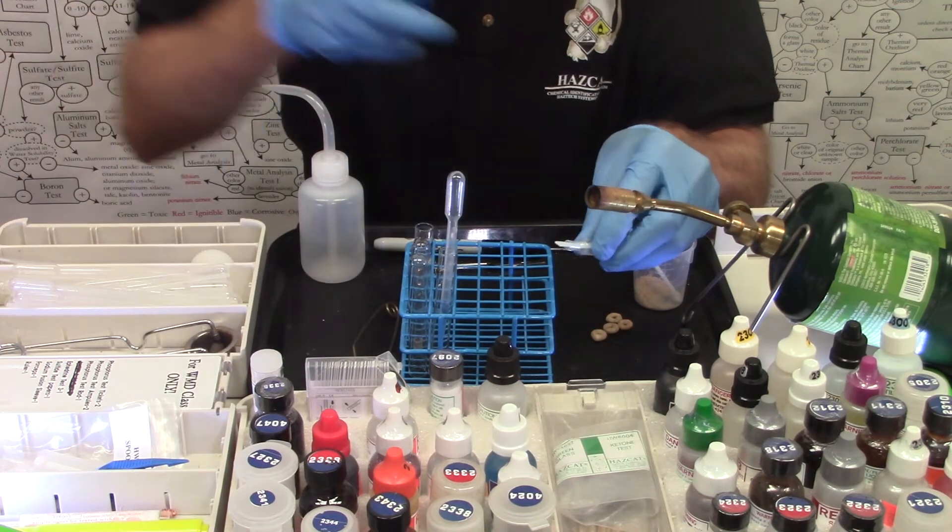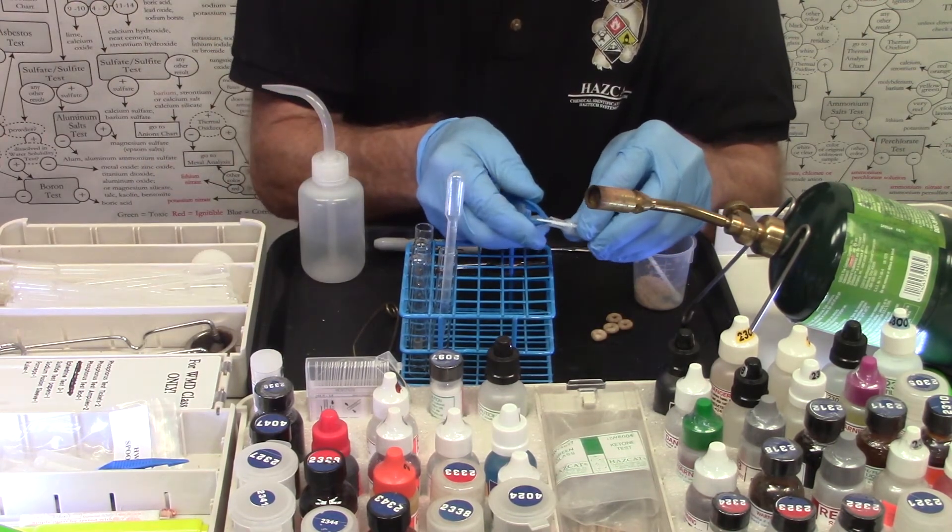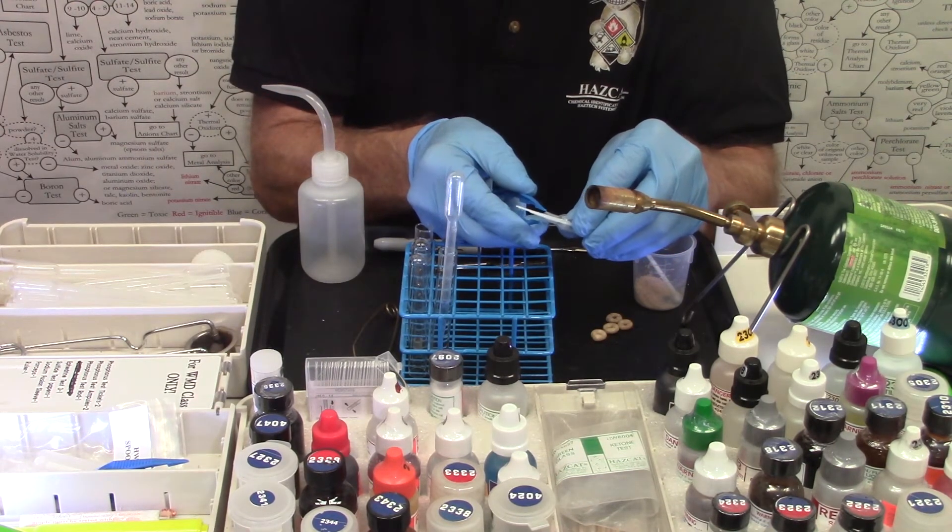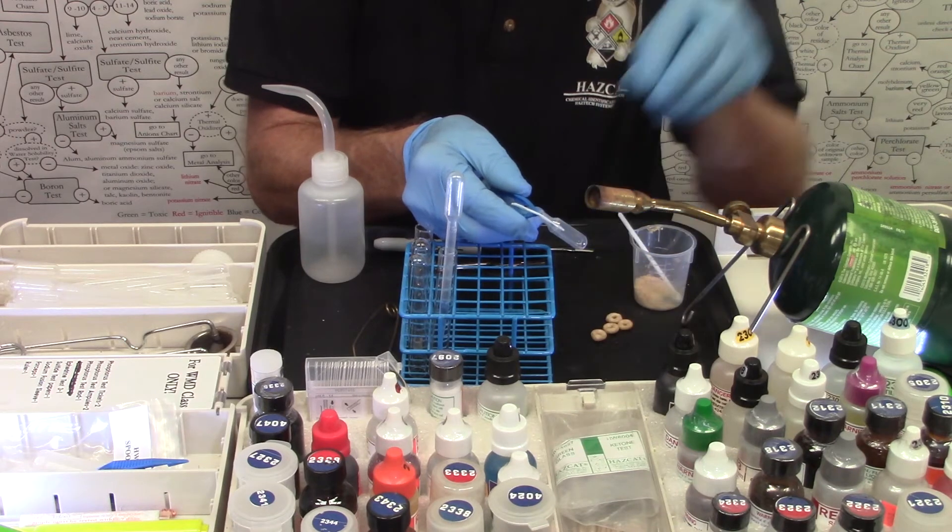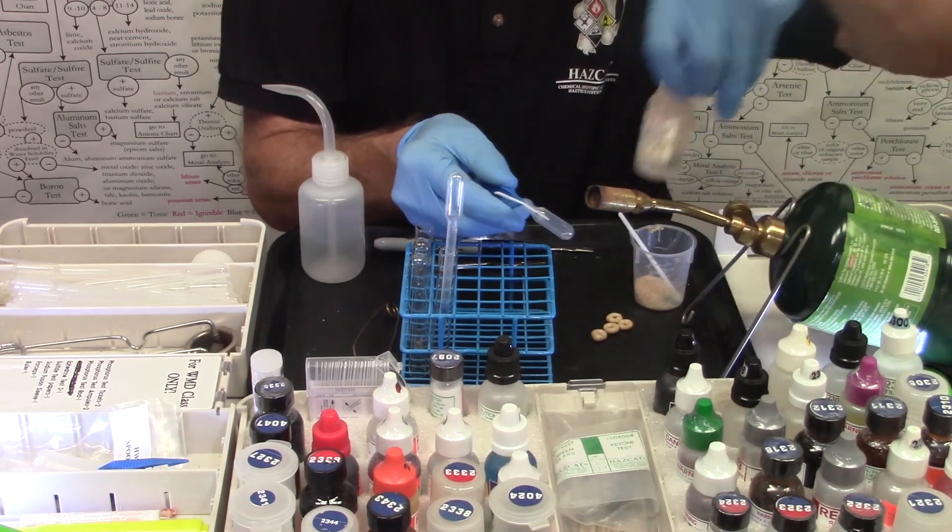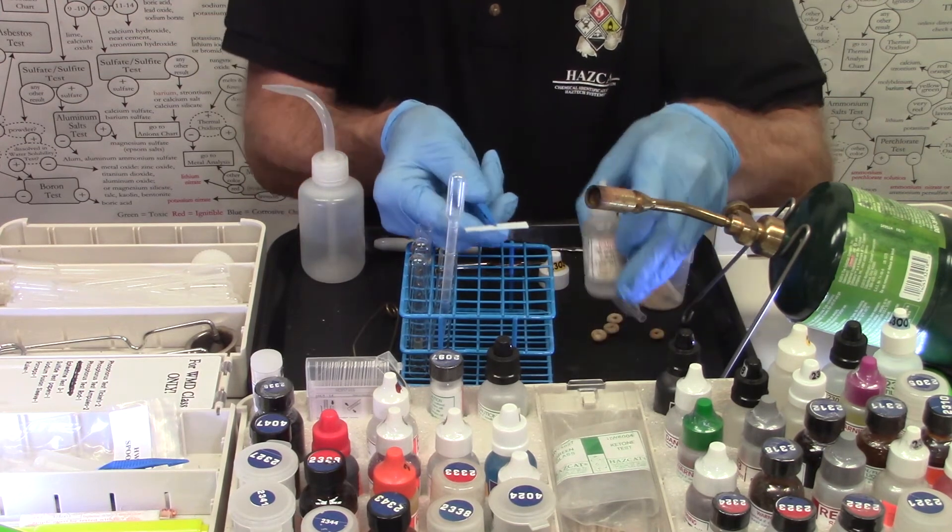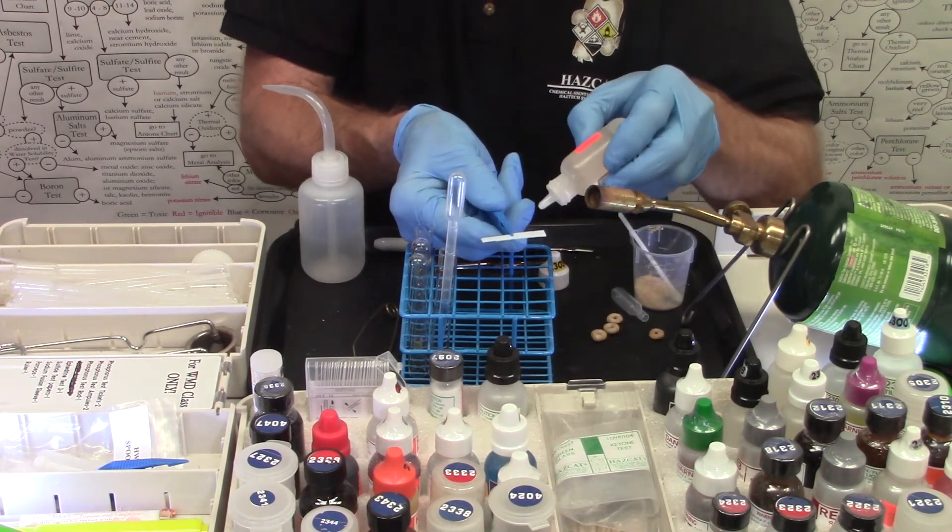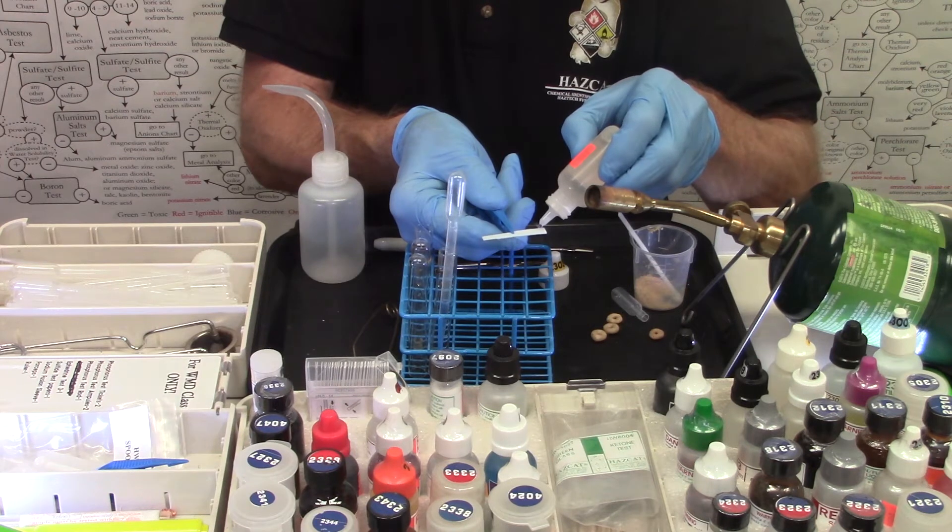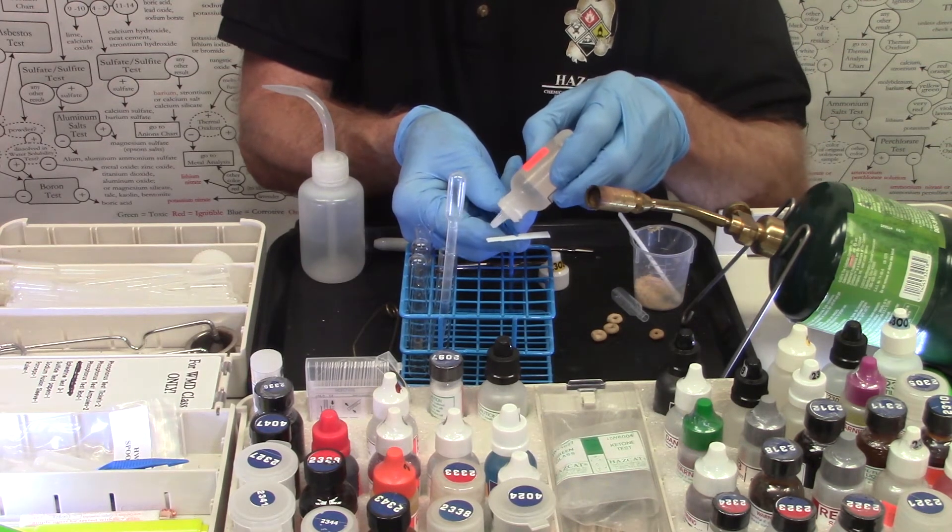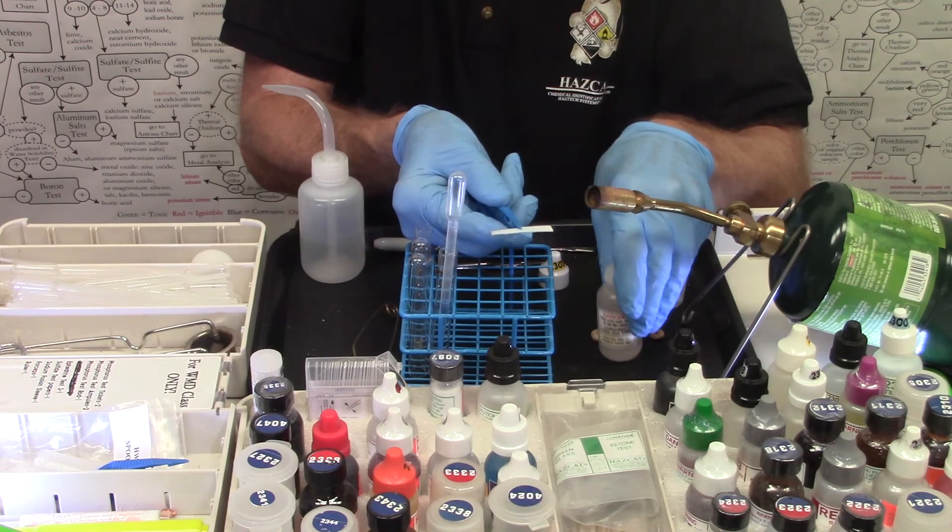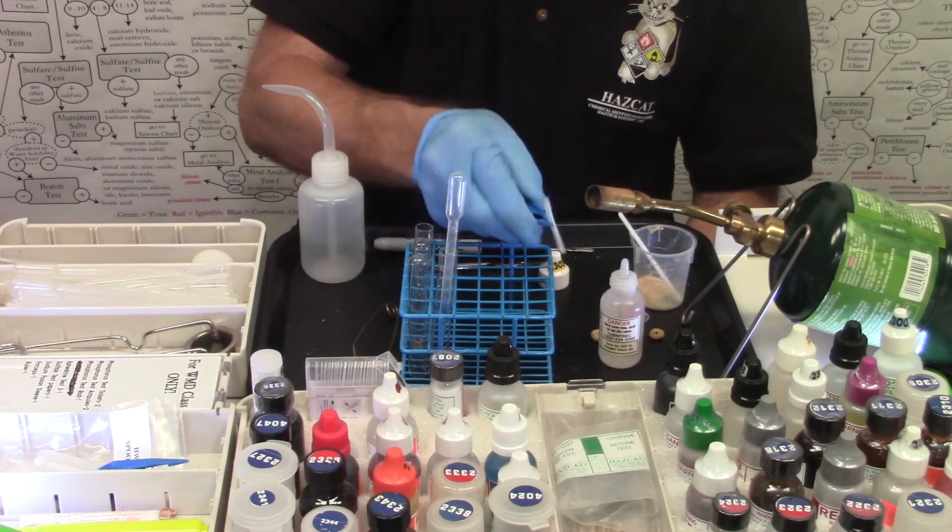And now very carefully, we're going to remove the paper using the forceps. We're going to grab it in the middle. And once we pull it out, we're going to take our 2303 and add one drop of this 2303 hydrochloric acid to each end. And we're looking for the formation of a blue color.